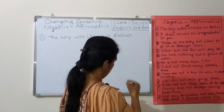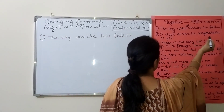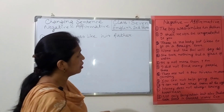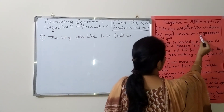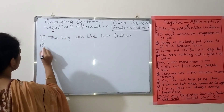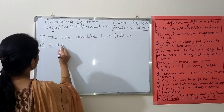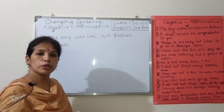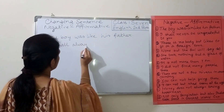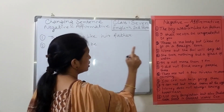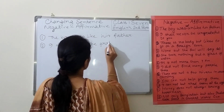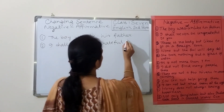The next sentence is: 'I shall never be ungrateful to you.' Here we get two negative signs — 'never' and 'ungrateful.' The affirmative will be: instead of 'never' we will use 'always,' and instead of 'ungrateful' we will use 'grateful.' So the answer is: 'I shall always be grateful to you.'